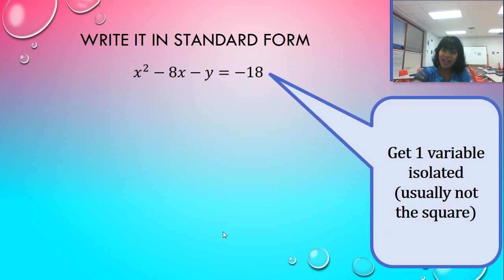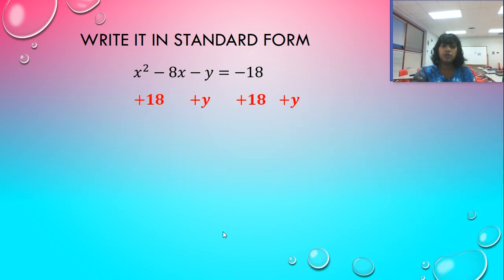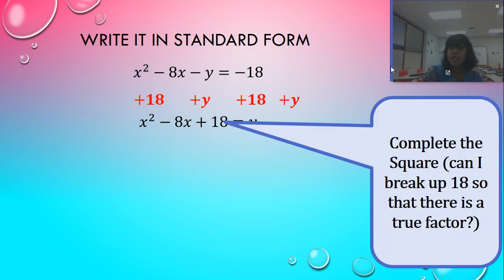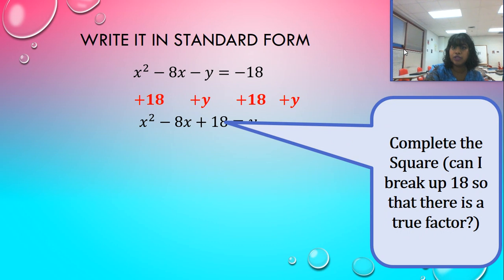So we need to isolate our variable, usually not the square. I'm so sorry, I usually have that on silent. And so the first thing I'm going to do is I moved my 18 to the left-hand side and I moved my y. And there's a reason why we went ahead and moved the 18. And you're going to see it in just a second. I could have left the 18 over there. But does that help me factor x squared minus 8x plus 18?